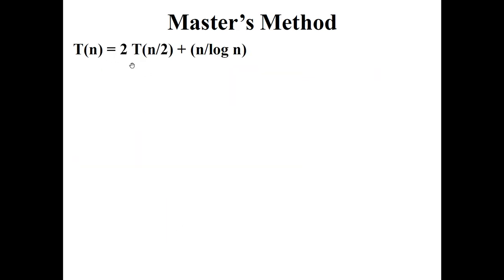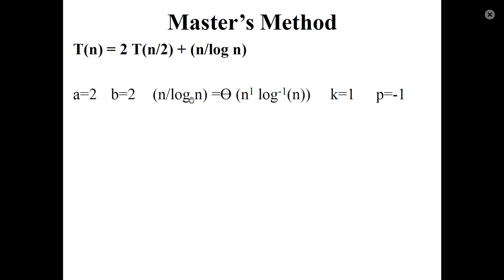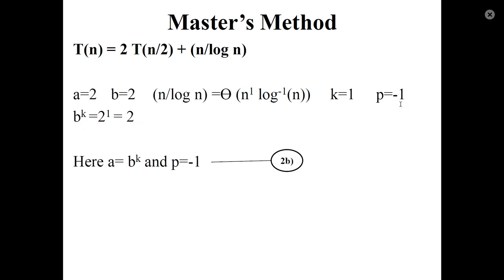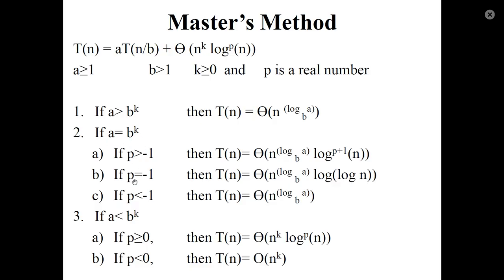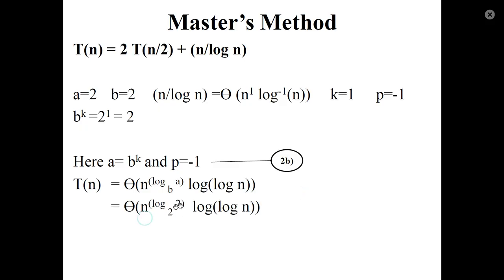Next question: T(n) = 2T(n/2) + n/log n. Here a = 2, b = 2. Since n/log n = n · log⁻¹(n), we have k = 1 and p = −1. Find b^k: 2¹ = 2. Since a = b^k and p = −1, T(n) = Θ(n^(log_2(2)) · log(log n)) = Θ(n · log(log n)).